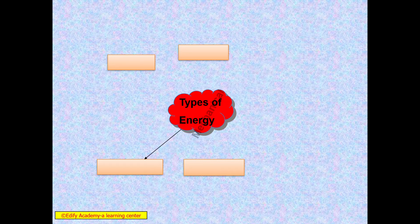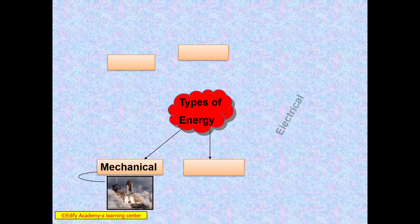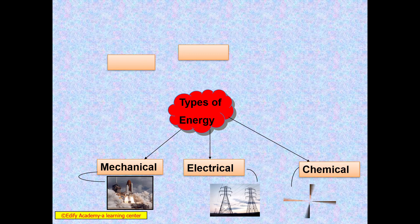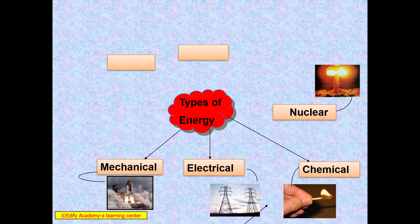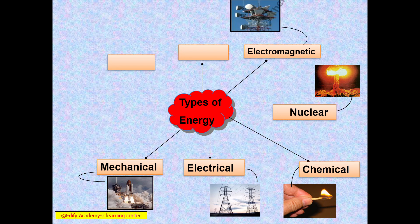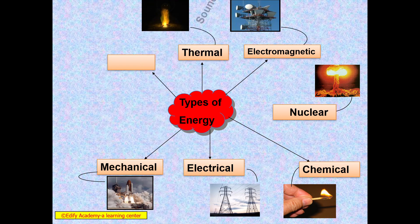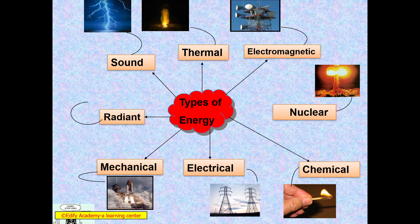Let us see what are the types of energies. There are different types of energies, but we'll be discussing a few of them. Majorly, we'll be covering all the parts of energies like mechanical energy, electrical energy, chemical energy, nuclear energy, electromagnetic energy, thermal energy, sound energy, and radiant energy. These are the types of energies we have discussed.